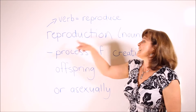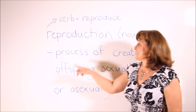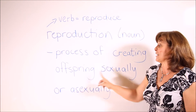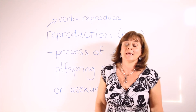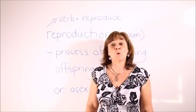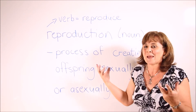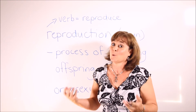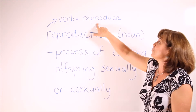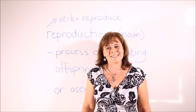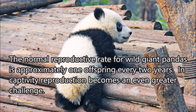Our next word is reproduction. Reproduction is the process of creating offspring sexually or asexually. In informal language we call it making babies. The verb we use to refer to creating offspring sexually or asexually is reproduce. The normal reproductive rate for wild giant pandas is approximately one offspring every two years. In captivity, reproduction becomes an even greater challenge.